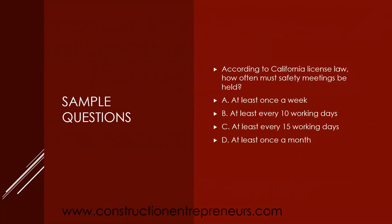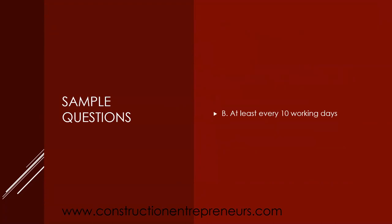Next question: According to California license law, how often must safety meetings be held? A, at least once a week? B, at least every 10 working days? C, at least every 15 working days? Or D, at least once a month? The answer is B — at least every 10 working days.